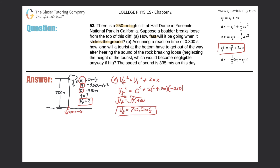Now for Part B. It says: assuming a reaction time of 0.3 seconds, how long will a tourist at the bottom have to get out of the way after hearing the sound of the rock breaking loose, neglecting the height of the tourist? It tells us that the speed of sound is 335 meters per second. Let's think about what's going to happen first in Part B.